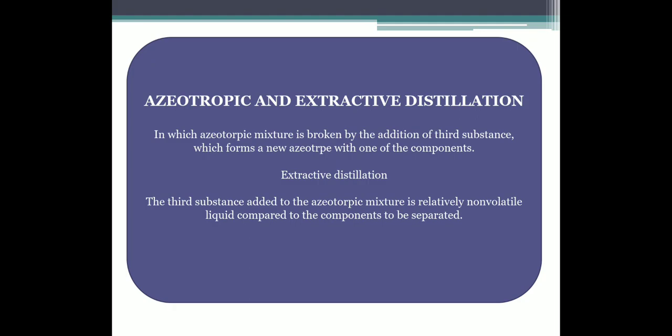The principle of azeotropic and extractive distillation is that you need to mix any such substance that will increase the relative volatility between the two components. When the relative volatilities increase, obviously the separation of components can be obtained easily. These are called azeotropic ternary mixtures with minimum boiling point, which have maximum vapor pressure, and are pharmaceutically important.